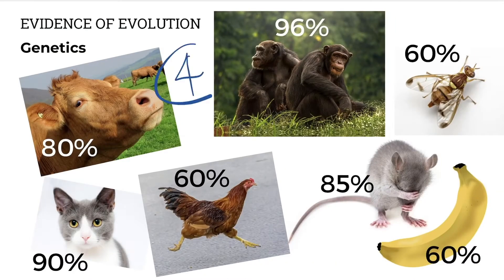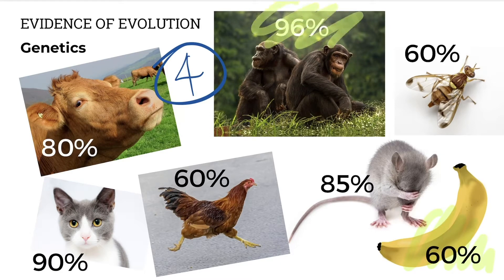Number four: we look at genetics as evidence of evolution. We compare the DNA between species. For example, humans are 60% similar to bananas and 96% similar to chimps. The closer the similarities, the closer the relationship, and the more recent the common ancestor.